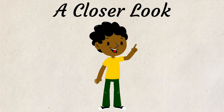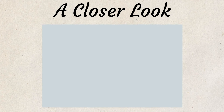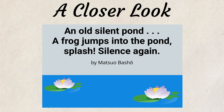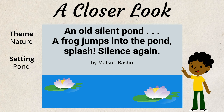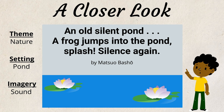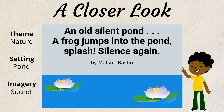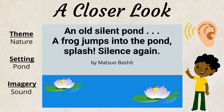Let's take a closer look at a haiku poem written by Matsuo Basho. 'An old, silent pond. A frog jumps into the pond. Splash! Silence again.' In this poem, the theme is nature and the setting is a pond. The poet uses imagery through the sense of sound to help you imagine a silent and still pond. You can almost hear the splash the frog makes as it jumps into the pond.